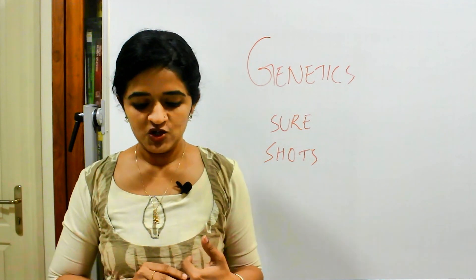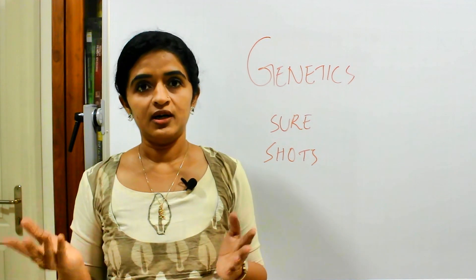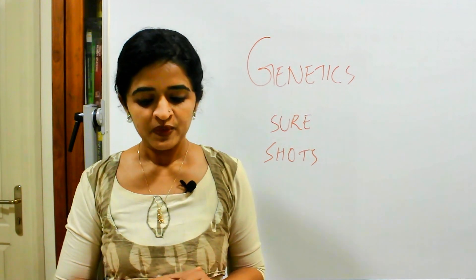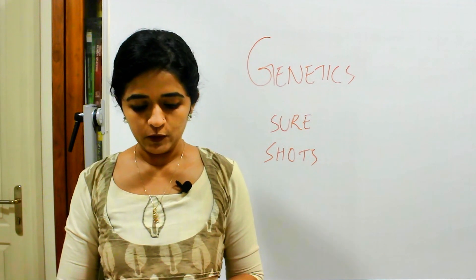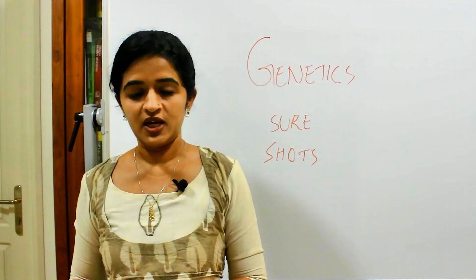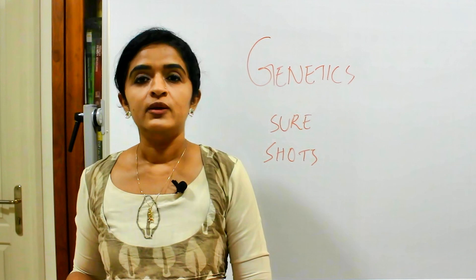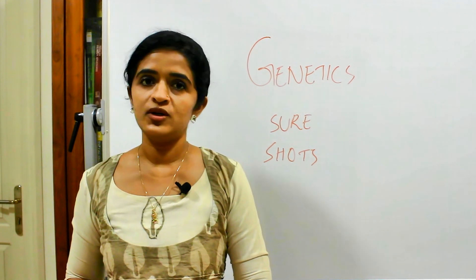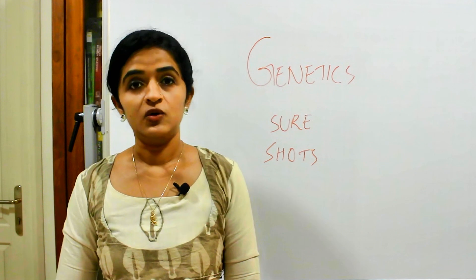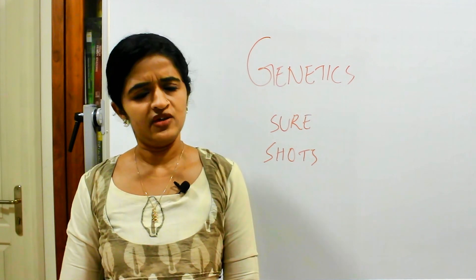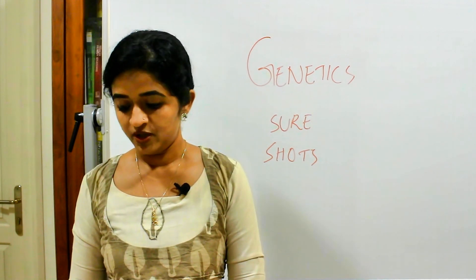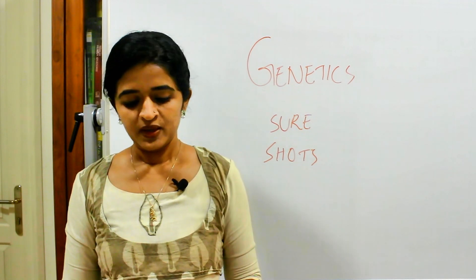Prader-Willi and Angelman syndromes are based on the paternally derived region of a chromosome and the maternally derived region of a chromosome — those two important concepts you need to know. Then Edward syndrome and Patau syndrome — the trisomies, trisomy 18 and trisomy 13. You should also know what polymorphism and mutation mean, their definitions and applied aspects. Down syndrome is a very favorite question for most exams.